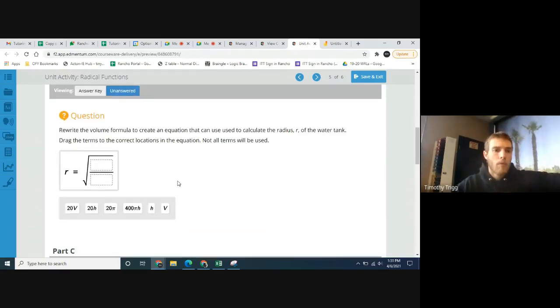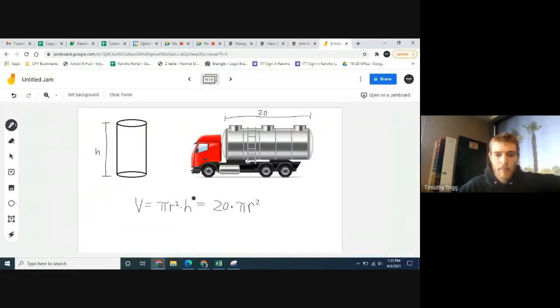Question two, or part B. Rewrite the volume formula to create an equation that can use to calculate the radius r of the water tank. I think that's a typo. Drag the terms to the correct locations in the equation. Not all the terms will be used. Notice it says r equals, and it says square root something. Basically, we want to take that formula that we have here, 20 pi r squared, and we want to solve for r.